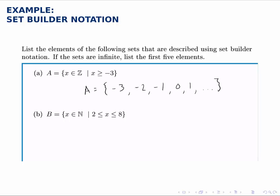So we just put ellipses to indicate that this set goes on forever in that direction. It's the set of all integers greater than or equal to negative 3.